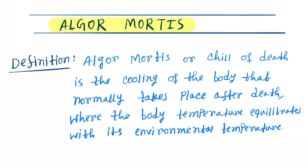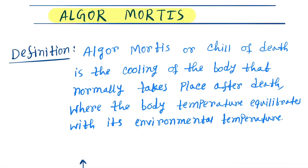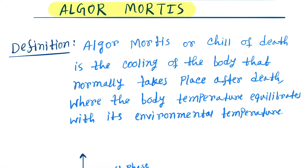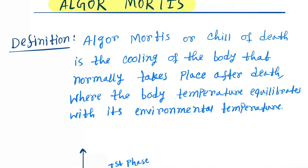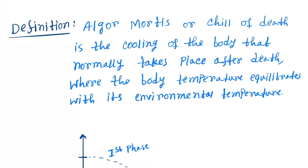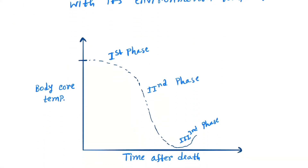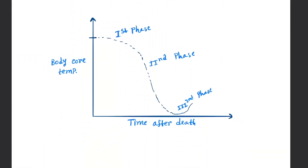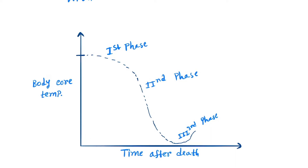Hello friends. Today our topic is algor mortis, or the cooling of the body. Algor mortis, or 'chill of death,' is the cooling of the body after death, where the body temperature equilibrates with its environmental temperature. You can see a curve here of algor mortis.